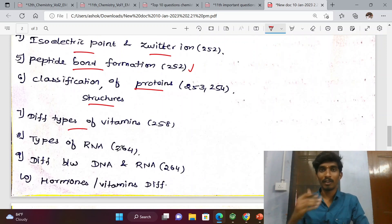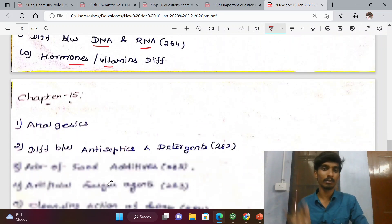Different types of vitamins (fat soluble and water soluble), types of RNA, difference between DNA and RNA, and difference between hormones and vitamins.